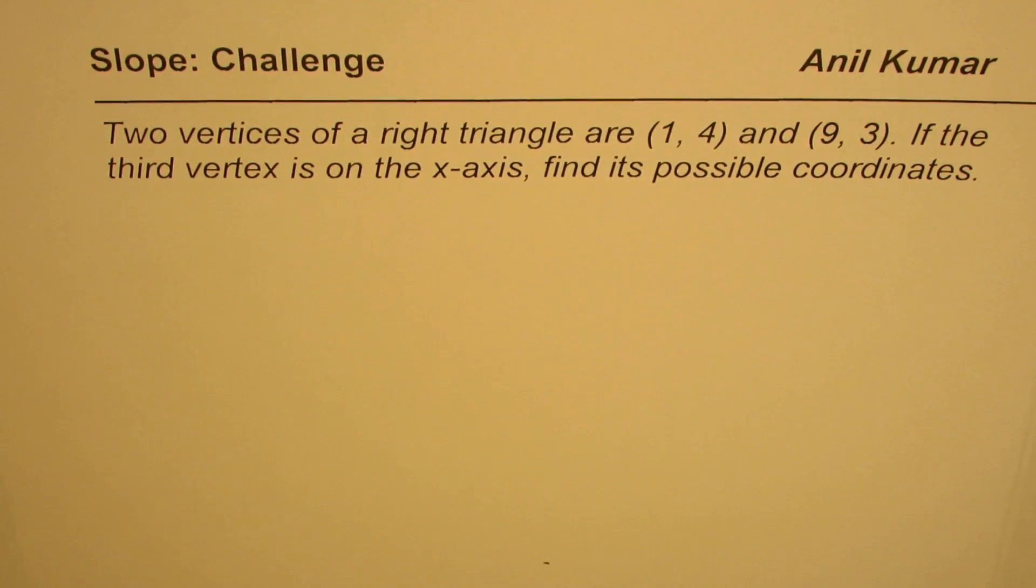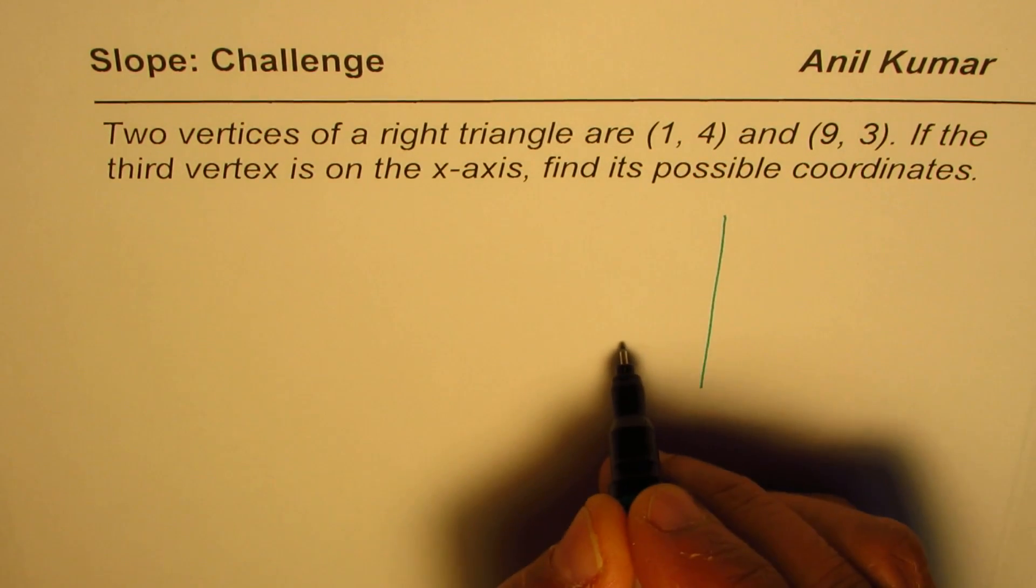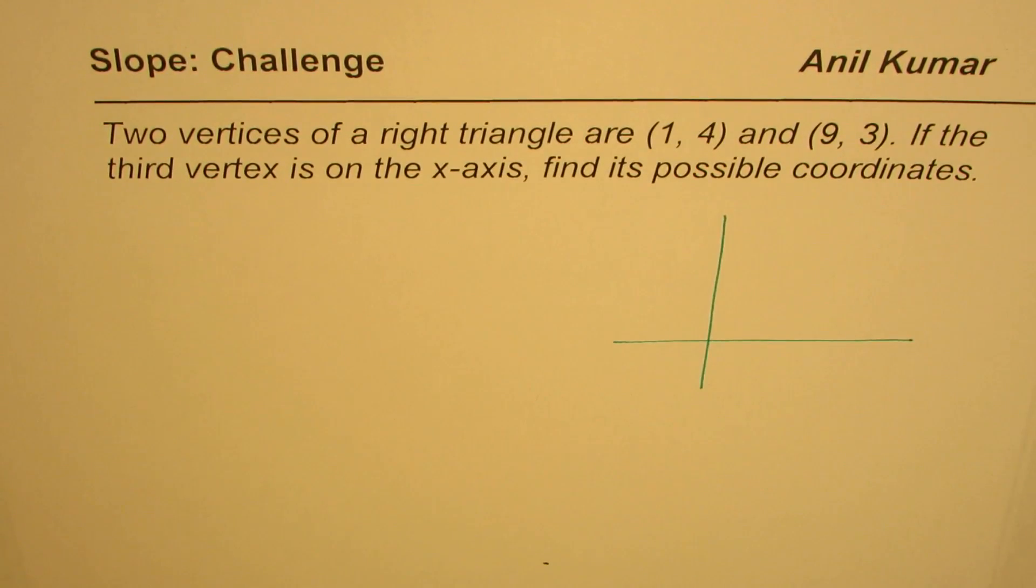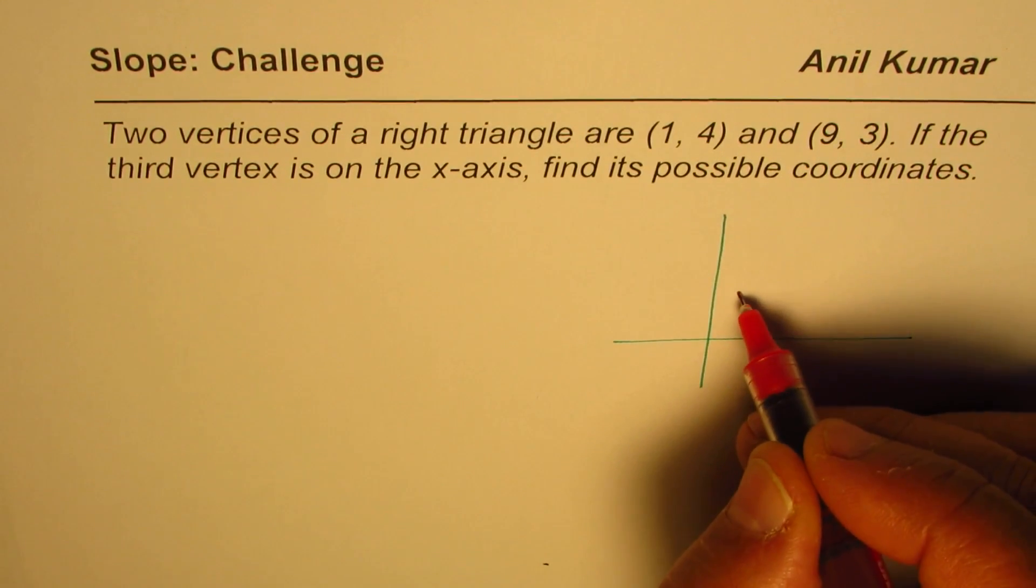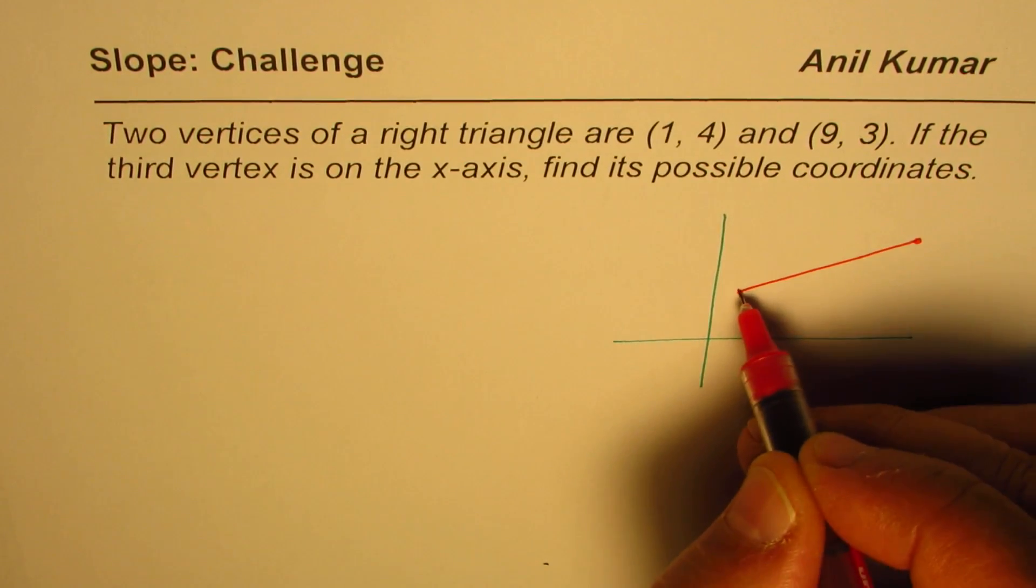I'd like you to pause the video, answer the question, and then look into my suggestion. Let me sketch and then we'll begin solving this particular question. We are given two vertices which are at (1, 4) and (9, 3). So let's say this is our (1, 4) and then let's say this is (9, 3) somewhere like this.